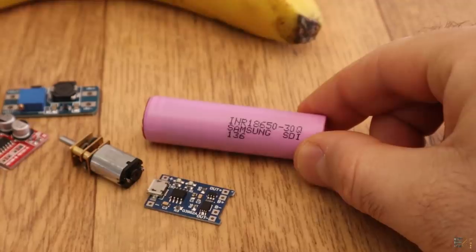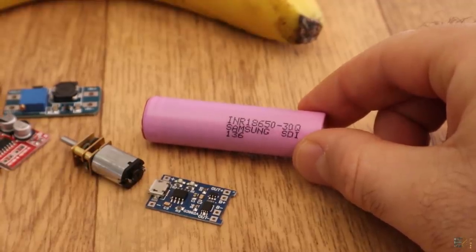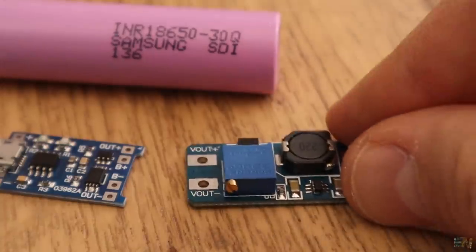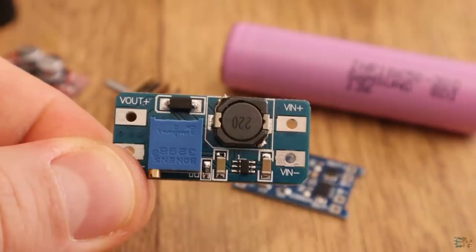Okay, now the battery can give us around 3.7V up to 4.2V. That's not enough for the full speed of this motor. So I will use this simple boost converter module to boost the voltage up to 12V.